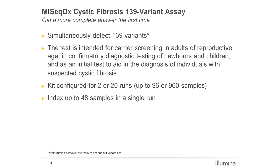The 139 variant assay comes in two kit configurations: a two-run kit designed for laboratories with smaller throughput needs, which provides results for up to 96 samples, and a larger 20-run kit designed for higher throughput facilities that provides results for up to 960 samples. An important thing to note is that with this 139 variant assay, you are able to multiplex up to 48 samples in a single run.